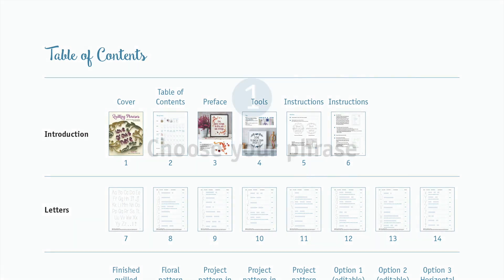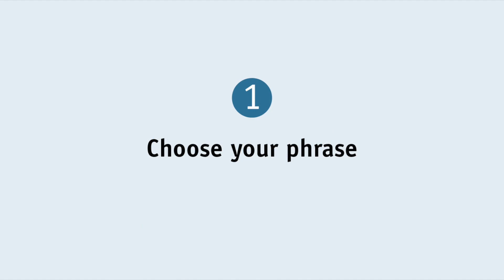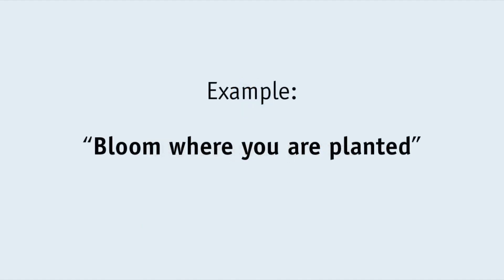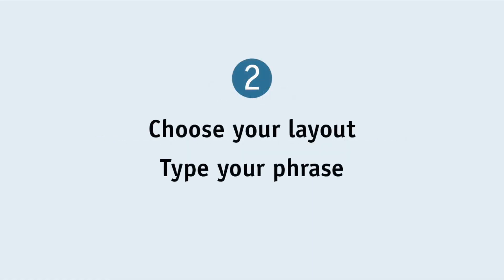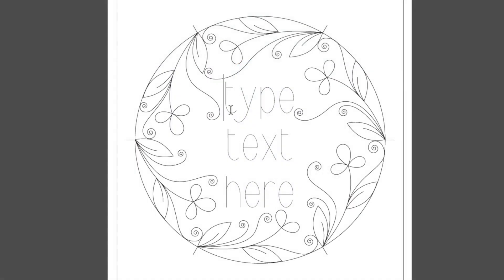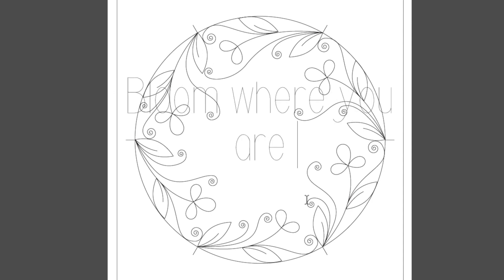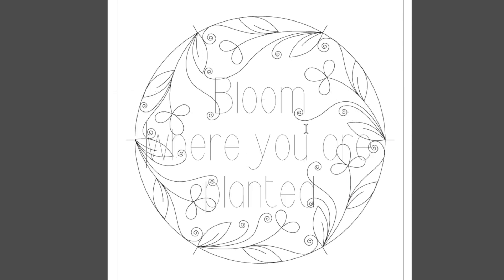Step one: choose your phrase. Let's say for example you want to make the phrase 'bloom where you are planted.' Step two: choose your layout and type in your phrase. Now you may need to try different layouts. Let me show you exactly what I mean. Say I want to type my phrase into the wreath layout. See how there's too many words to fit this wreath? So you'll need to choose a different layout that has enough room for your phrase.